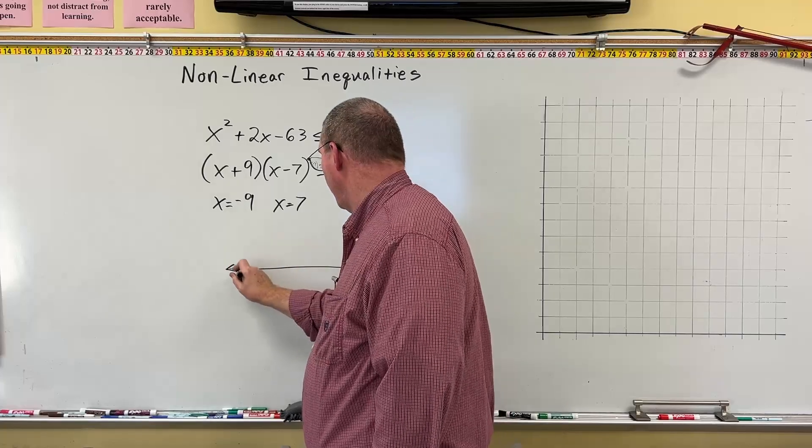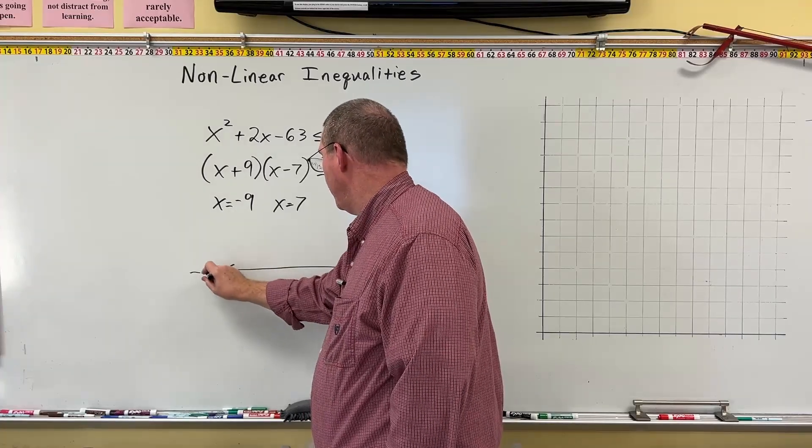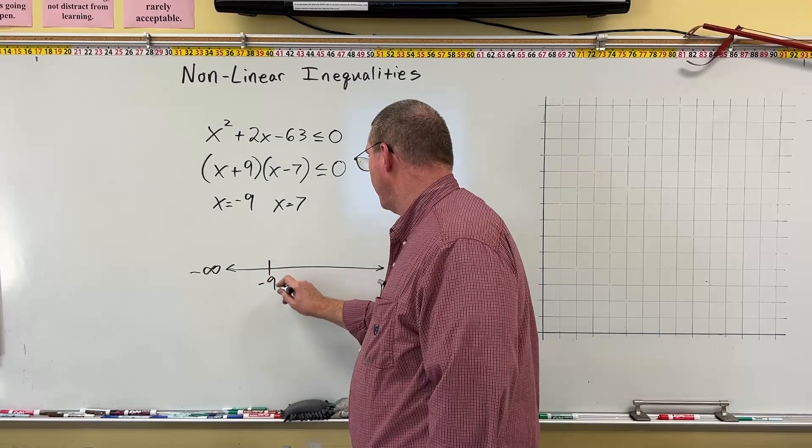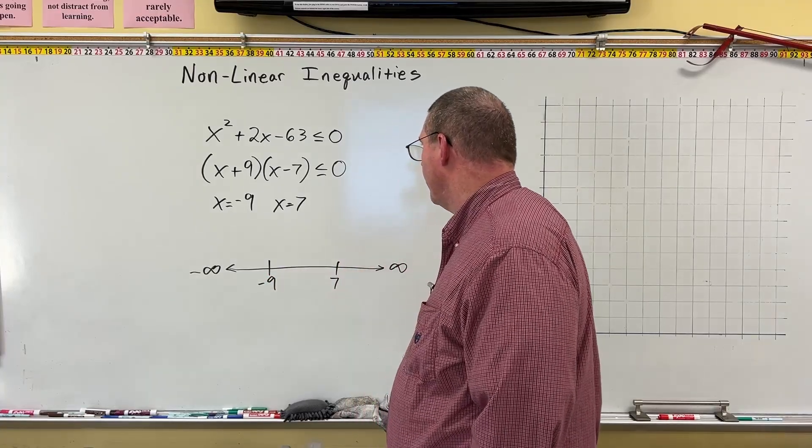We'll draw our horizontal line. We'll put negative infinity here, positive infinity here. We'll put negative 9 over here. We'll put positive 7 over here.